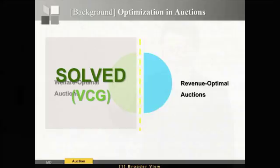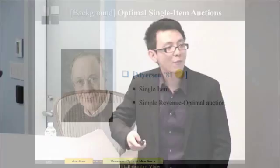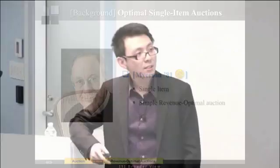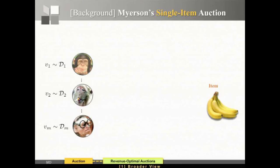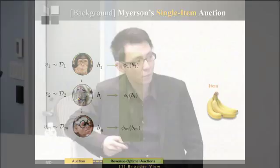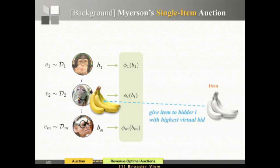For revenue, we understand much less. The most famous result is due to Myerson, who showed that if you have a single item for sale, a simple auction can actually maximize revenue — a beautiful result for which Myerson won the Nobel Prize. In Myerson's auction, bidders bid, the auctioneer transforms those bids into virtual bids using a deterministic function that depends on the bidders' distributions, then finds the bidder with the highest virtual bid and allocates the item to them. This is equivalent to finding an allocation that maximizes virtual welfare.